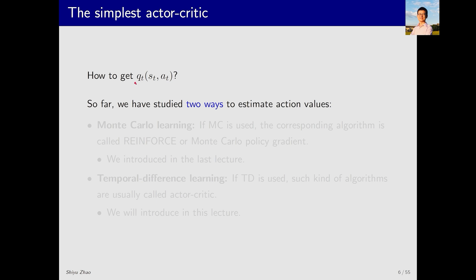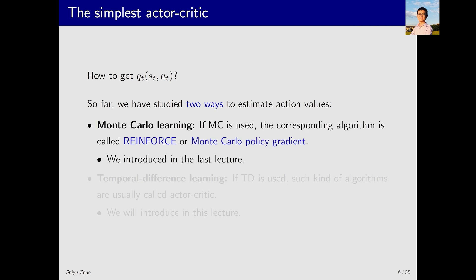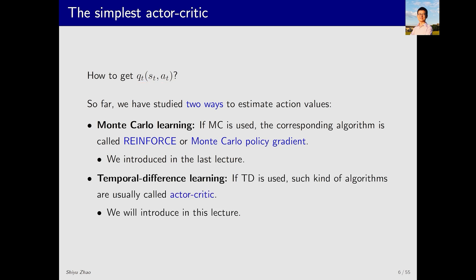How do we get the action value q_t? So far we have studied two methods to estimate action values. The first is the Monte Carlo method. To calculate the action value, we collect an episode and then compute the return for that episode, using this return as an estimate of the action value. If the action value is calculated this way and combined with the policy gradient algorithm, the entire algorithm is called REINFORCE, or Monte Carlo policy gradient, which we introduced in the previous lecture. The second method to estimate action values is temporal difference learning, which is the focus of today's lecture. When we use the TD method to estimate action values, the algorithm is usually called actor-critic.